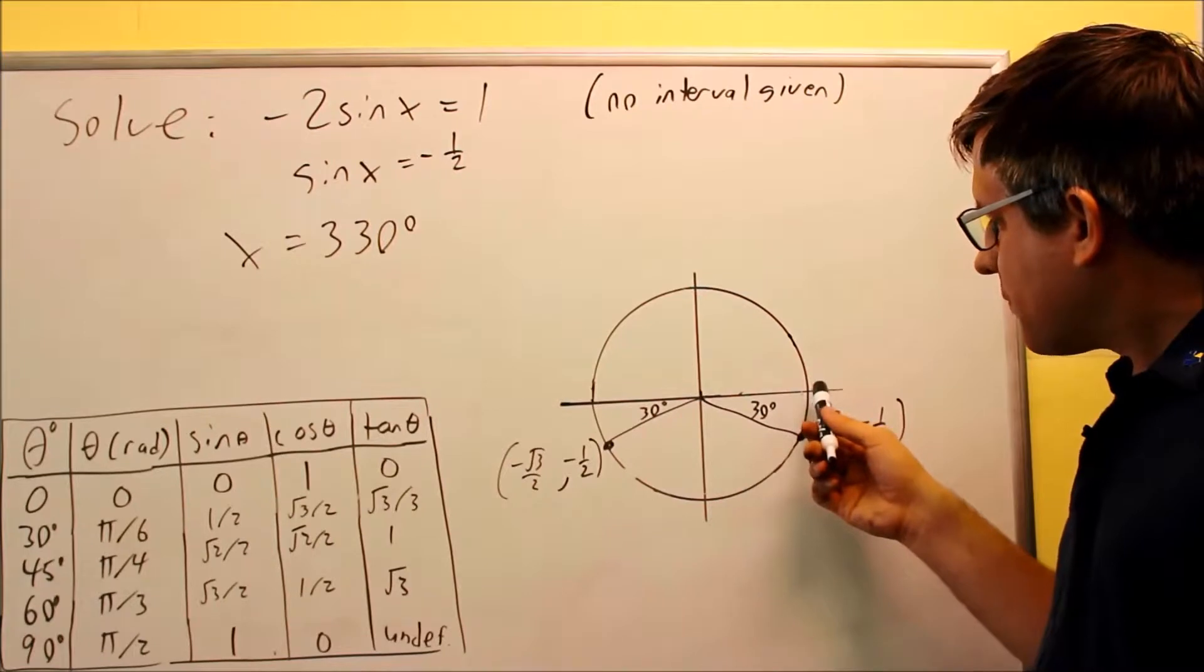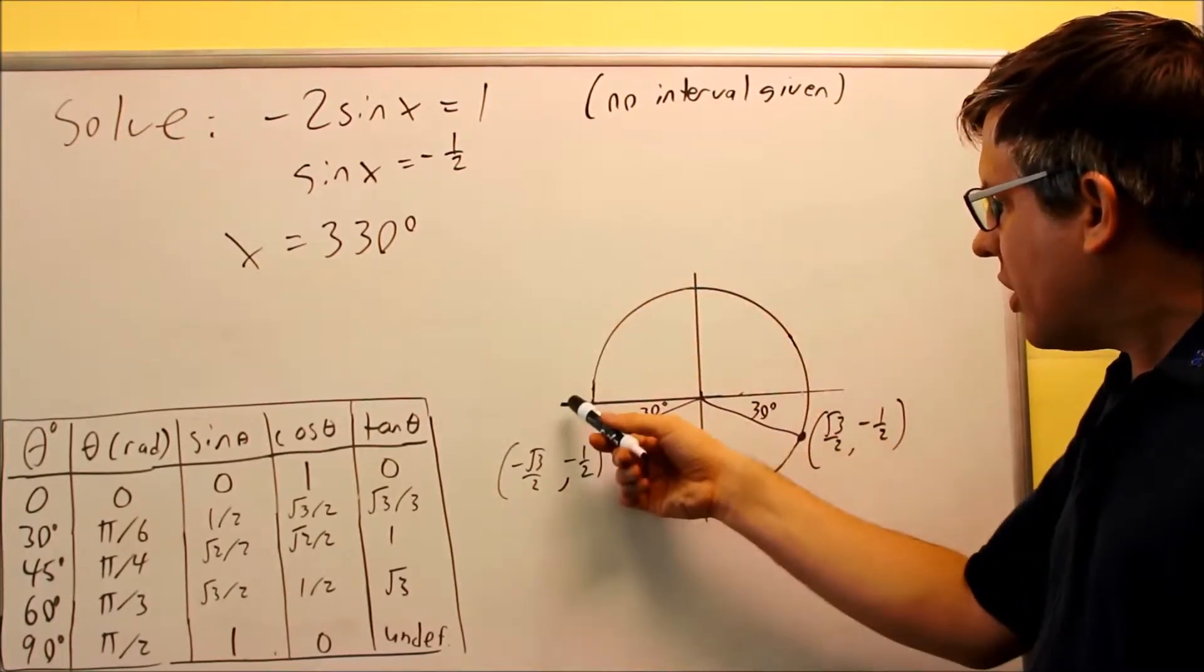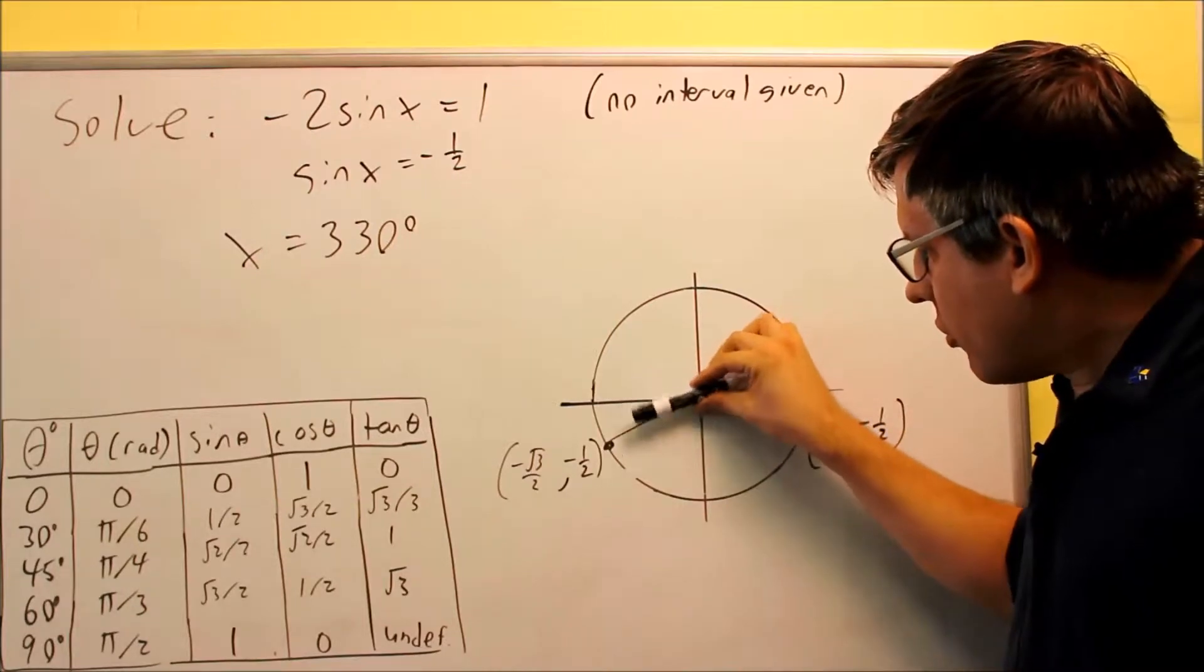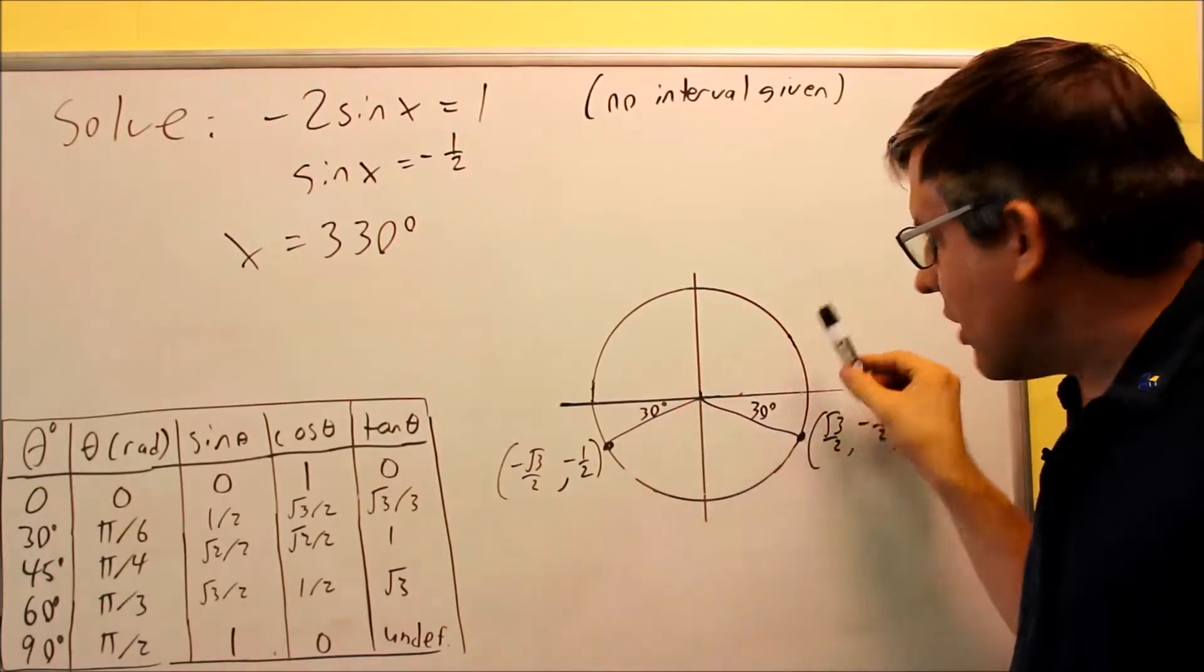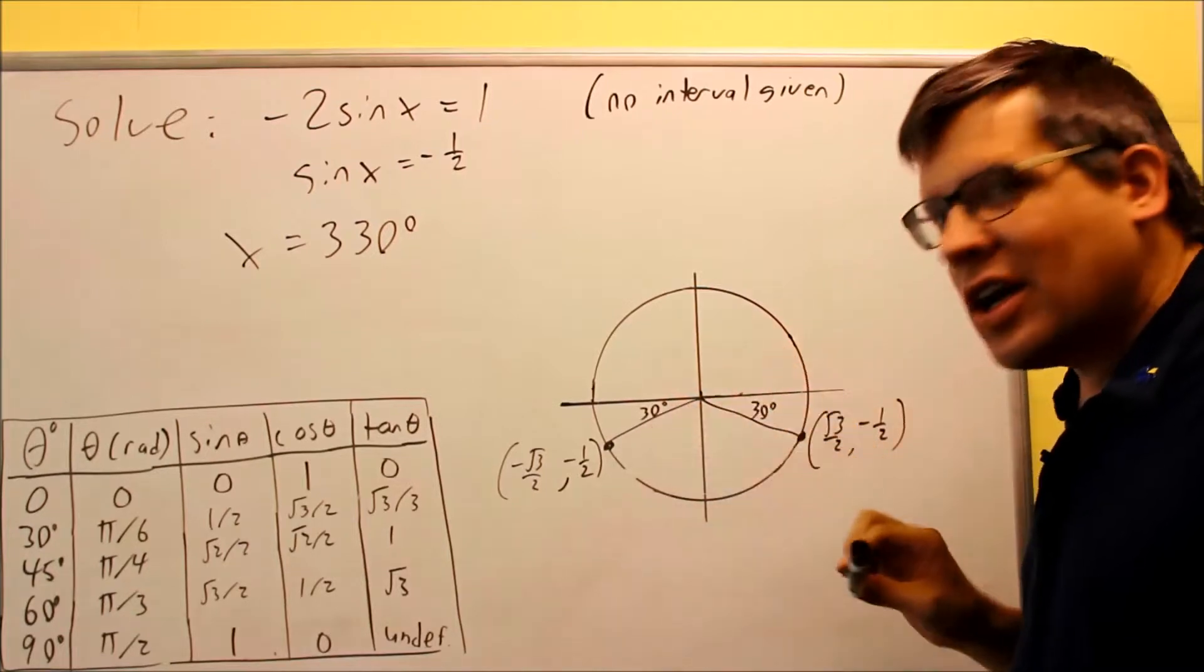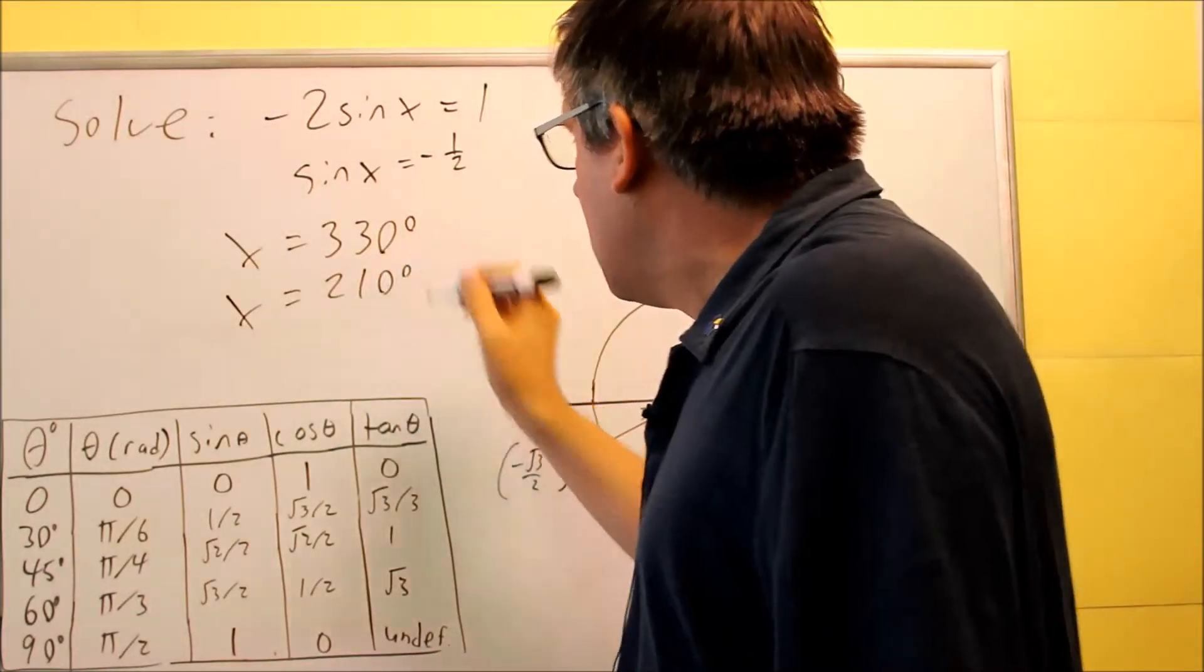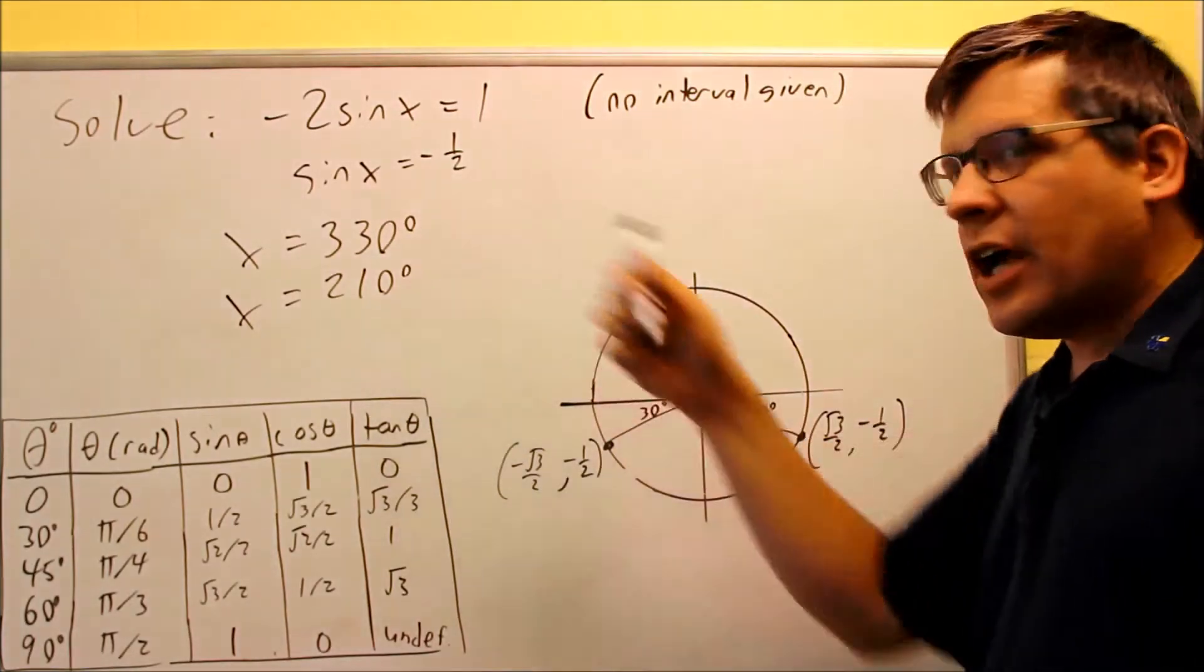Now what about this one? If you go all the way around to here, that's 180 degrees, and we're going to go an additional 30 degrees more past that. So 180 to here, another 30 past that, that's 210 degrees. So that's my other angle. So I have 330 and I have 210.